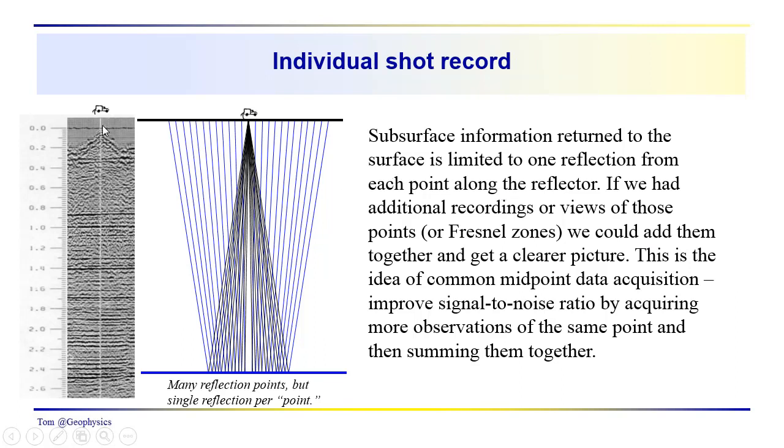Now, again, this is a single recording. These are the ray paths associated with the data that you see over here. So we get many reflection points, but these are single reflections per point. And we should also probably realize that these are not actually, we're not imaging a point, we're imaging a Fresnel zone. So the response that we see over here comes from a larger area about these reflection points, and that area is referred to as a Fresnel zone, and we'll talk a little bit more about that later.